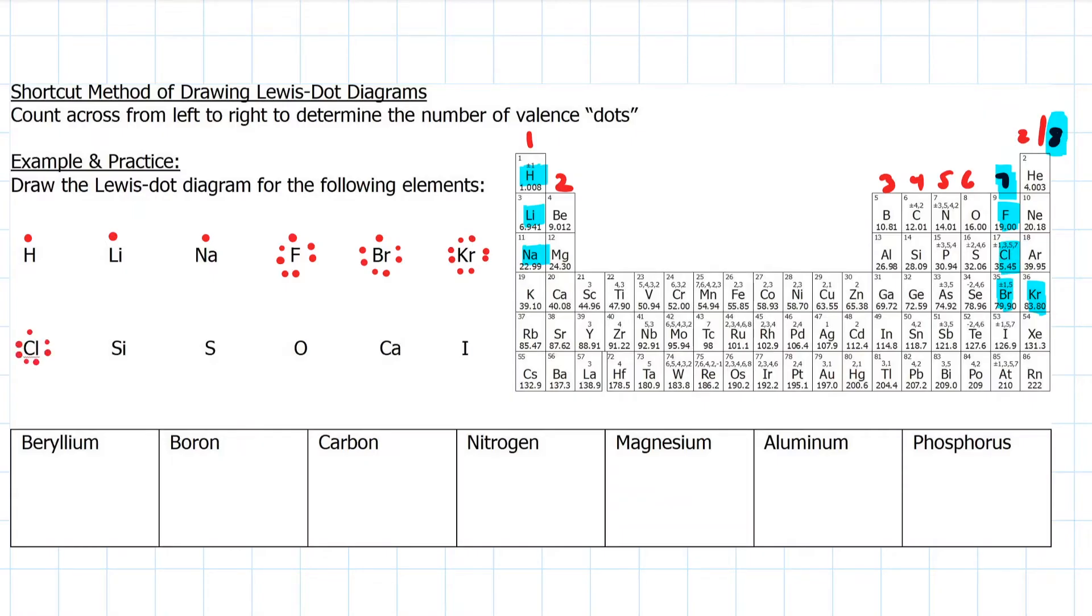Chlorine, seven. Silicon, one, two, skip a few, three, four valence electrons. Sulfur, five, six, just like its cousin oxygen, six. Calcium in the second group, so two dots. And finally, iodine is also a halogen, so seven.